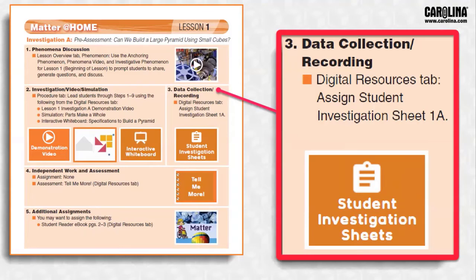The third step is Data Collection and Recording for the students and works in conjunction with the teacher instructions in Step 2. As your students are working through the procedure with you, this step provides guidance on what resources can be used for them to record their information. Student investigation sheets are available as a digital sheet that students can record right on their device or as a printable PDF that students can use with their science notebook.